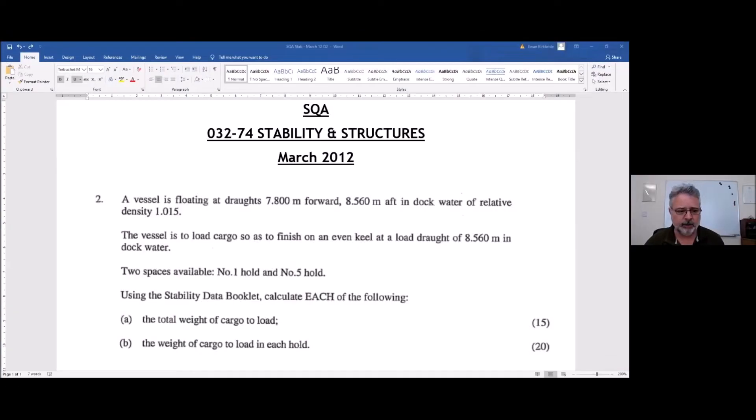Let's just have a look at it. I've got a copy of it up on screen, so let me just share that so we can, assuming there's more than one of you, have a look at it. A vessel floating at drafts 7.8 forward, 8.5 aft, so we're trimmed, which way? Trimmed by the stern.